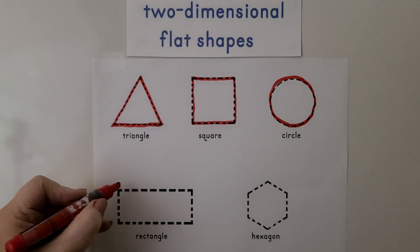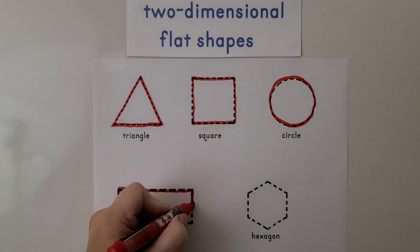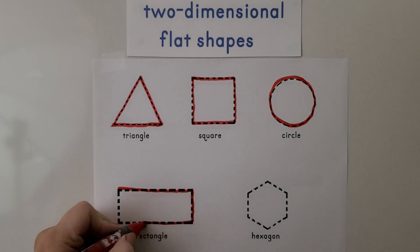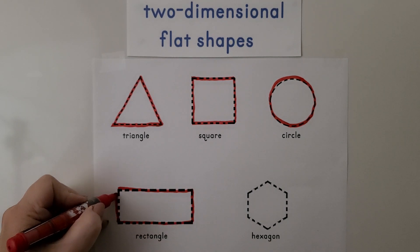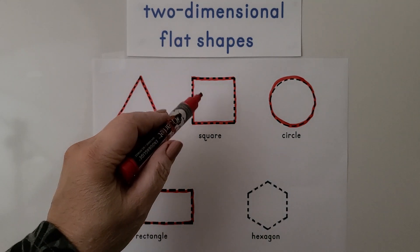Here we have a rectangle. It's got four straight sides just like the square. That's two, three, four, and it has four square vertices just like the square.